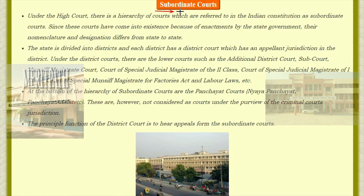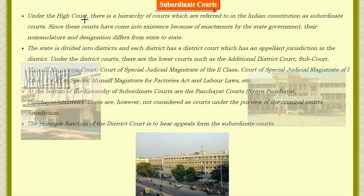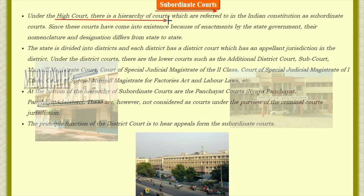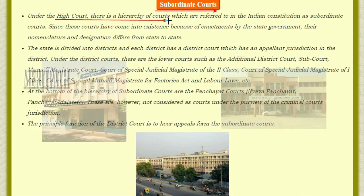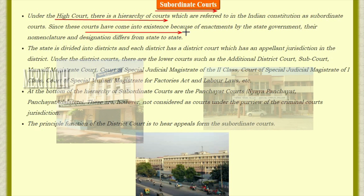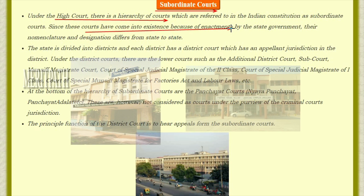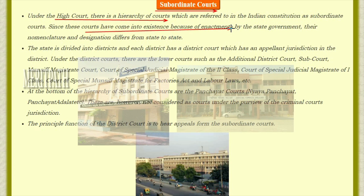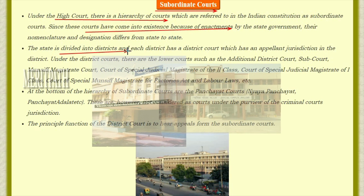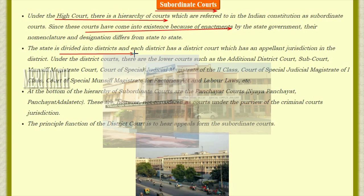Now let us learn about the subordinate courts. Under the High Court, there is a hierarchy of courts referred to in the Indian Constitution as subordinate courts. Since these courts have come into existence through enactments by the state government, the nomenclature and jurisdiction differ from state to state. The state is divided into several districts and each district has a district court which has appellate jurisdiction.